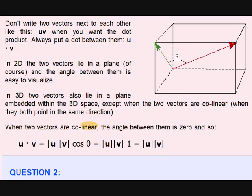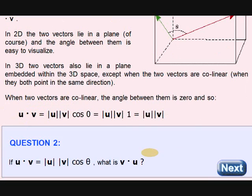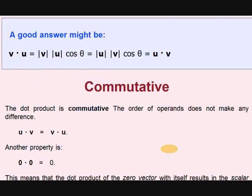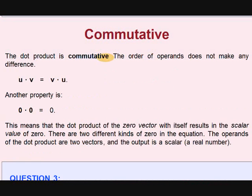Question two: U dot product V equals modulus U modulus V cos theta. What is V dot product U? Is it the same? Are you sure? Yes. Let's find it. V dot product U equals modulus V into modulus U cos theta, which equals modulus U into modulus V into cos theta.